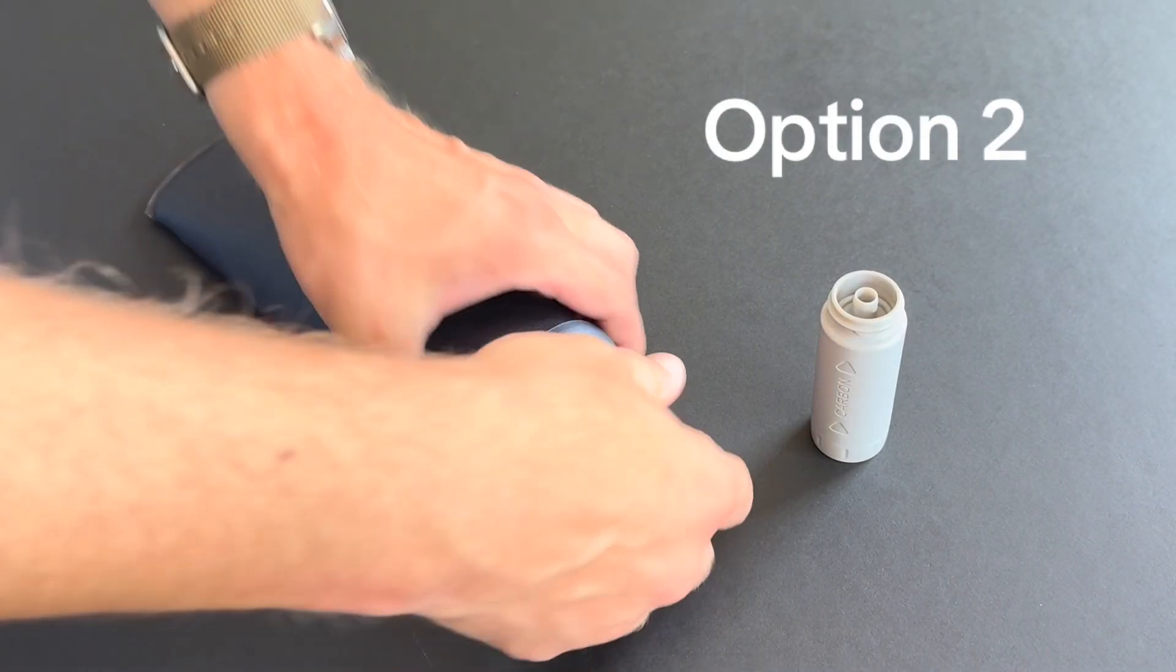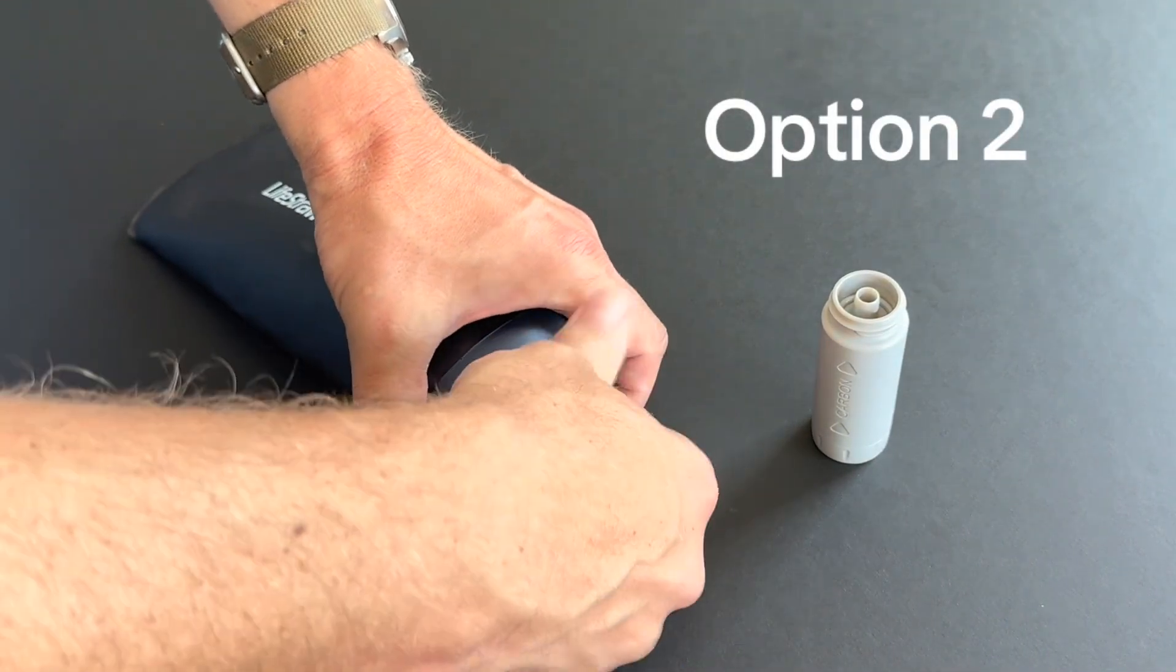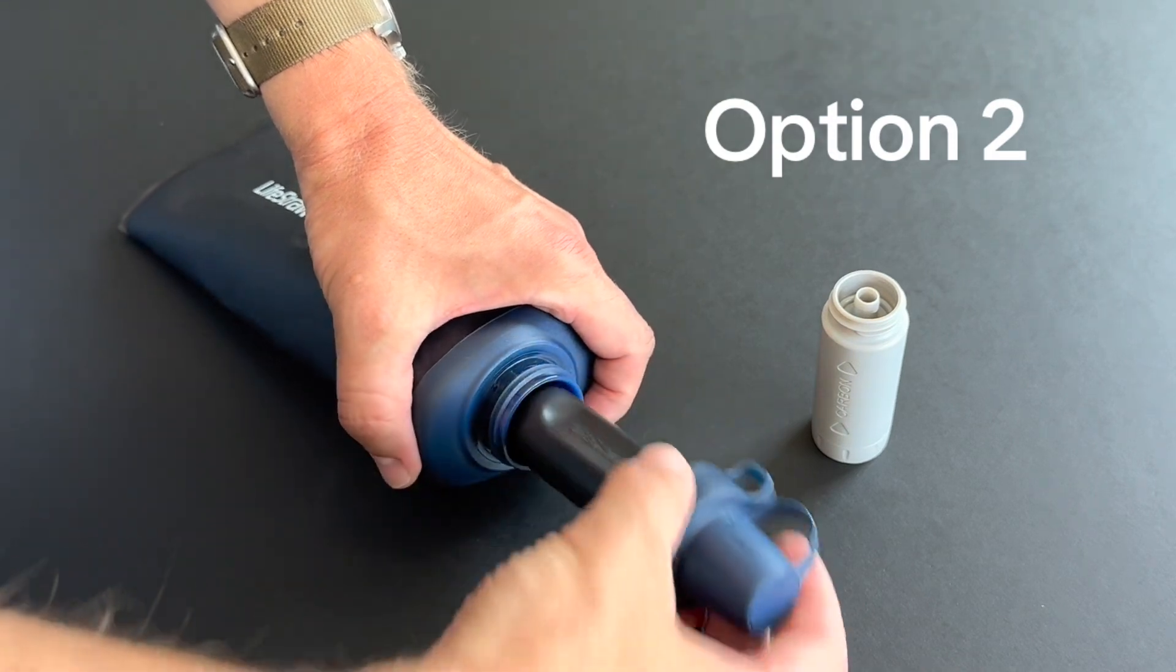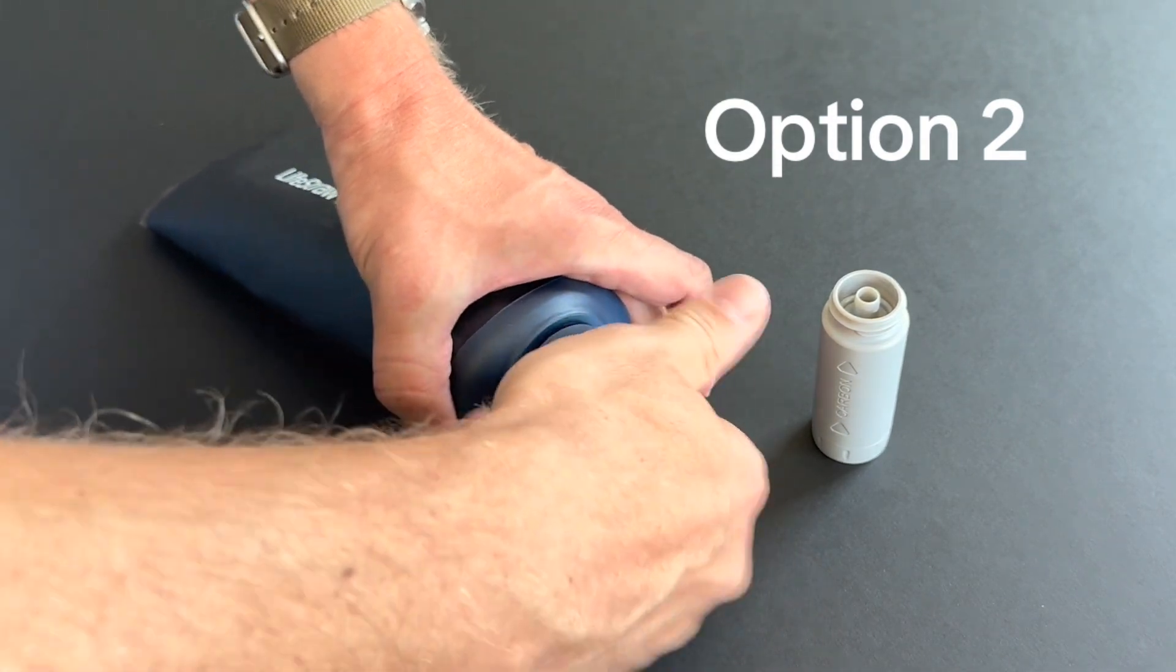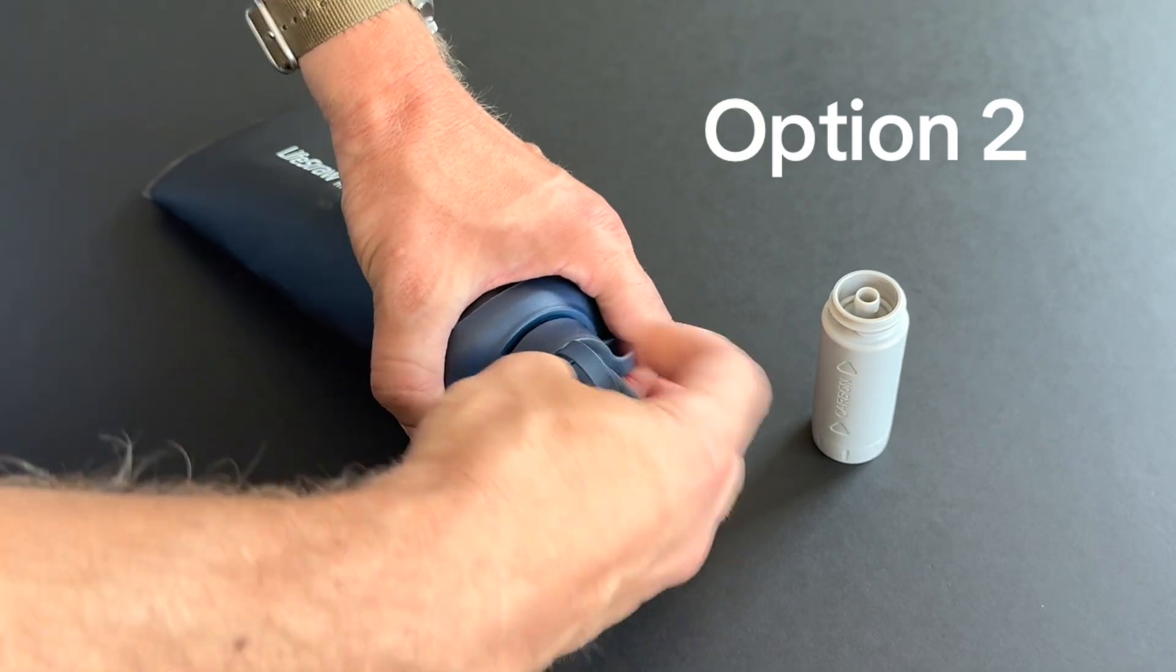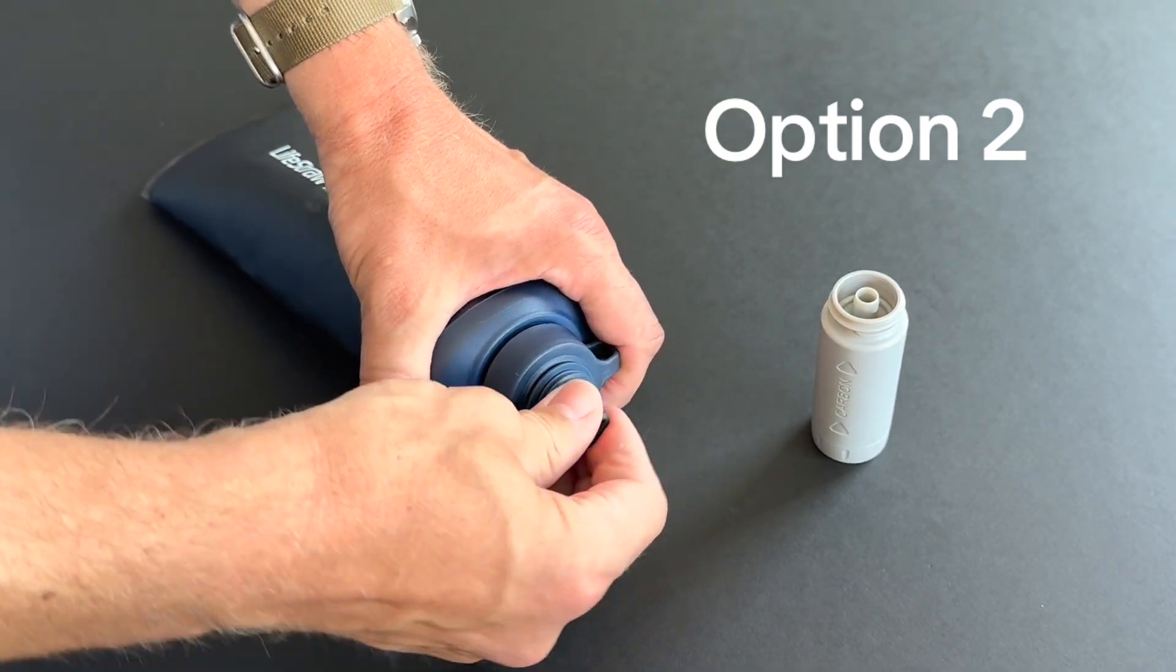For the LifeStraw Squeeze, with the filter mounted on the interior of the bag, what you'll want to do is remove the cap and the mouthpiece